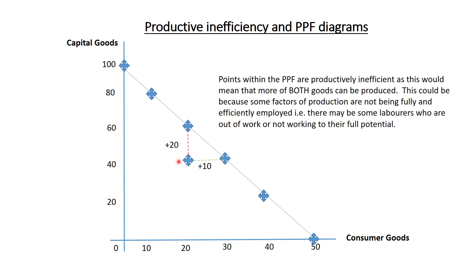Points within the PPF are productively inefficient because the economy is not producing the maximum amount of goods and services that it could produce. For example, the economy could produce 20 more capital goods or 10 more consumer goods from that point. If we are at a point within the PPF, it must mean that some factors of production are unemployed or being used inefficiently — in real life, that may mean some workers are unemployed or some machines are being used inefficiently. So remember, points within the PPF are productively inefficient.